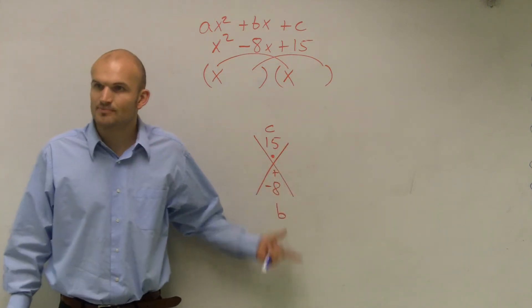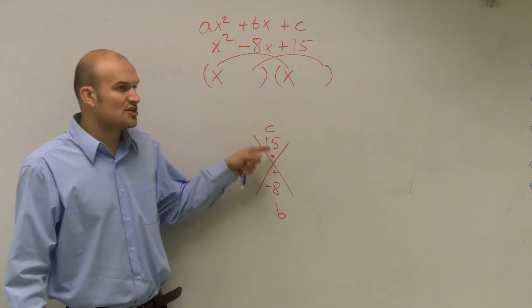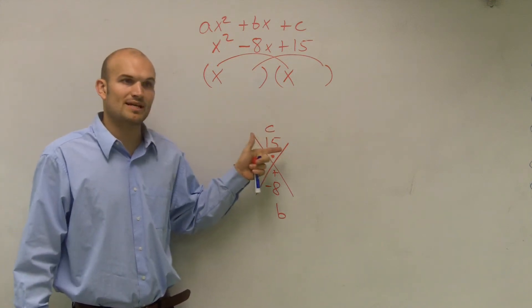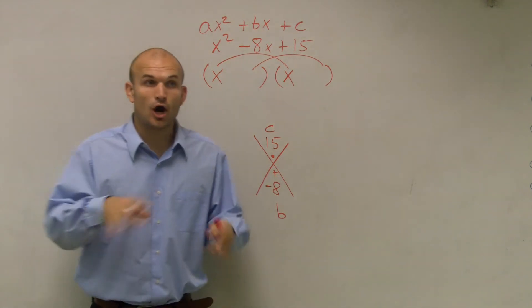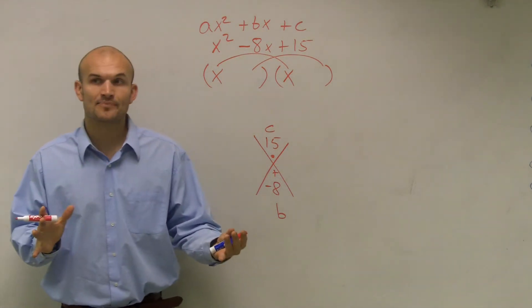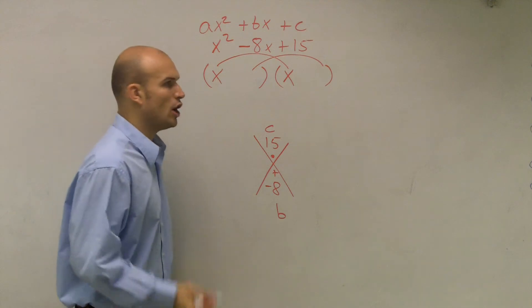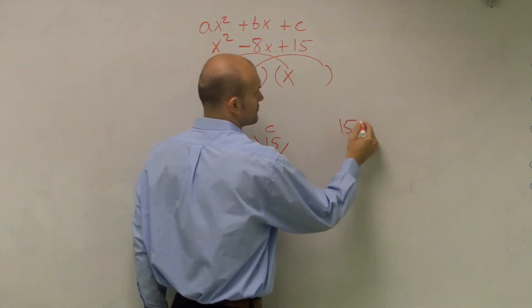Now, why do we use this? Because what I want you to do is I want you to figure out what two numbers multiply to give you 15, but add to give you negative 8. Now, think about all the numbers that multiply to give you 15. So let's think about it.